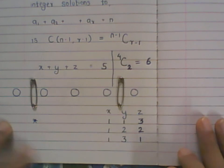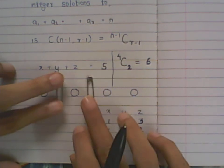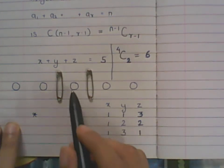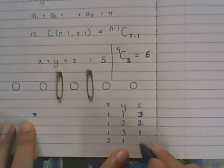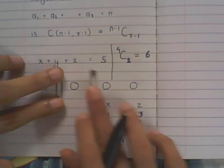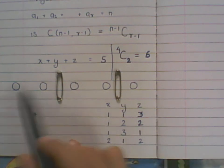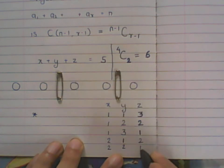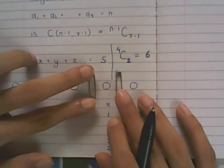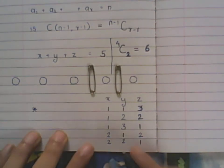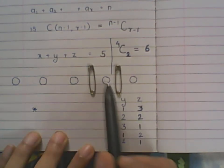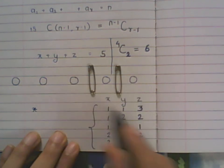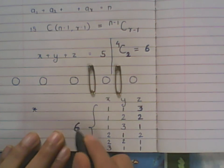Continuing: placing the partitions to give the first child two balls, the second one, and the third two gives (2,1,2). Shifting gives the first two, the second two, and the third one — so (2,2,1). Finally, placing the partitions at the far right gives the first child three balls, the second one, and the third one — so (3,1,1). That's all six possibilities.